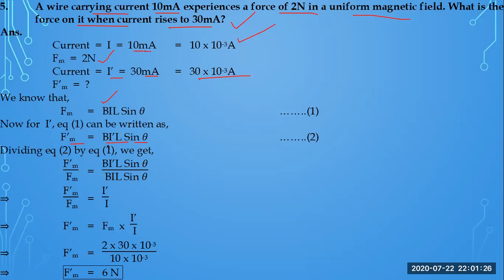Taking the ratio of the two force equations, sinθ cancels with sinθ, L cancels with L, and B cancels with B, giving F-dash divided by F equals I-dash divided by I. With I-dash equal to 30 milliampere and I equal to 10 milliampere, after substituting all values, the force acting at that time is calculated to be 6 Newton.